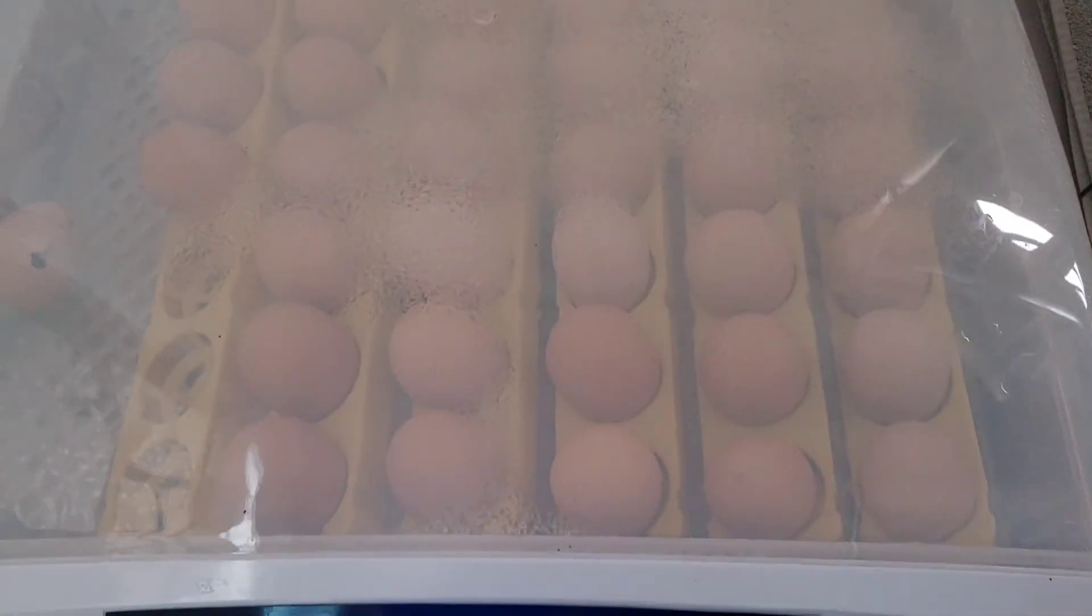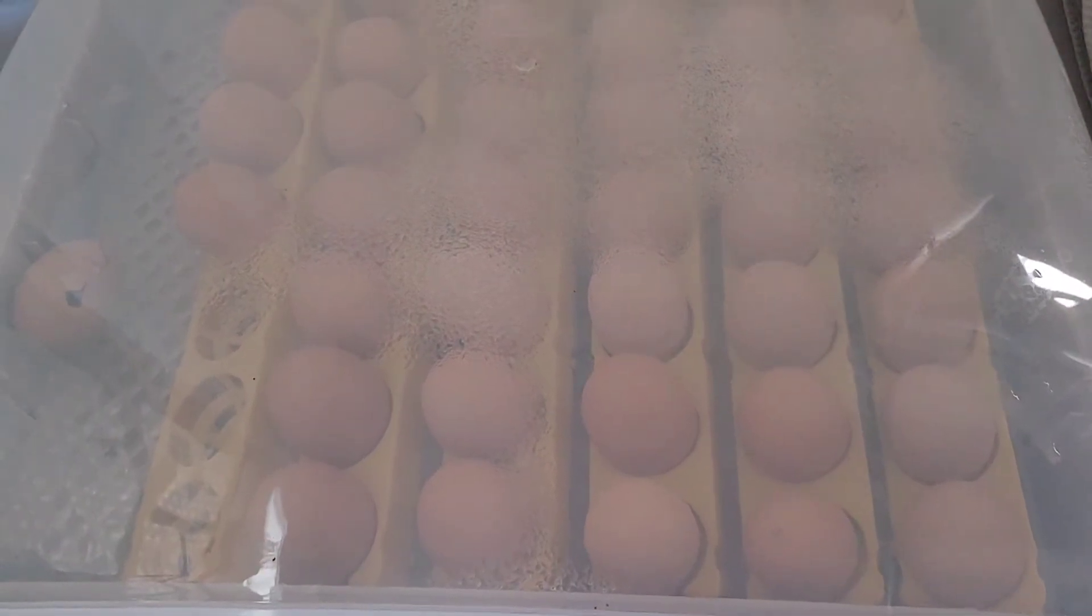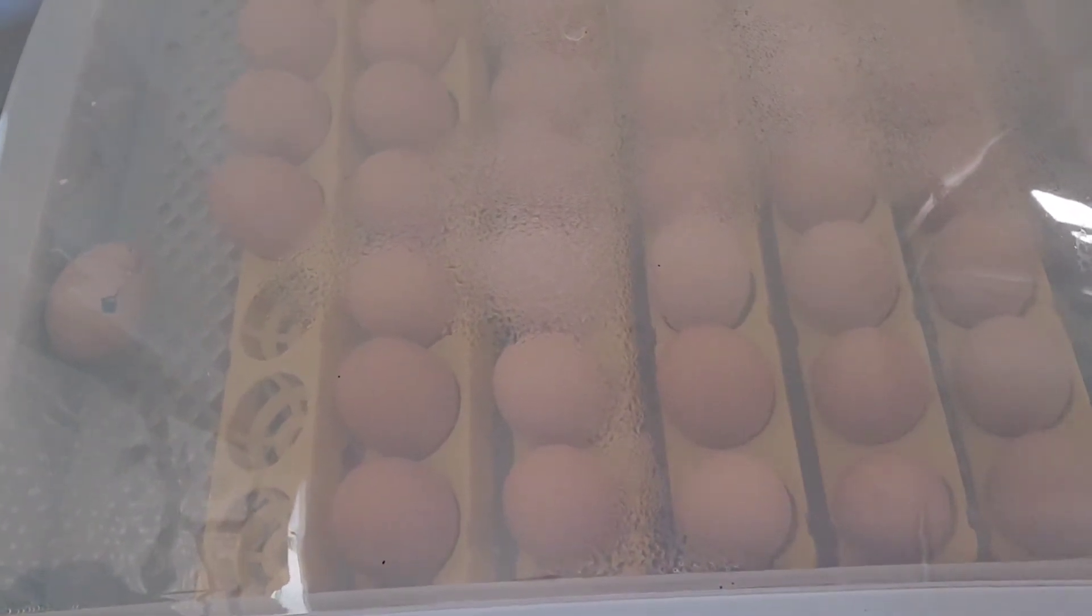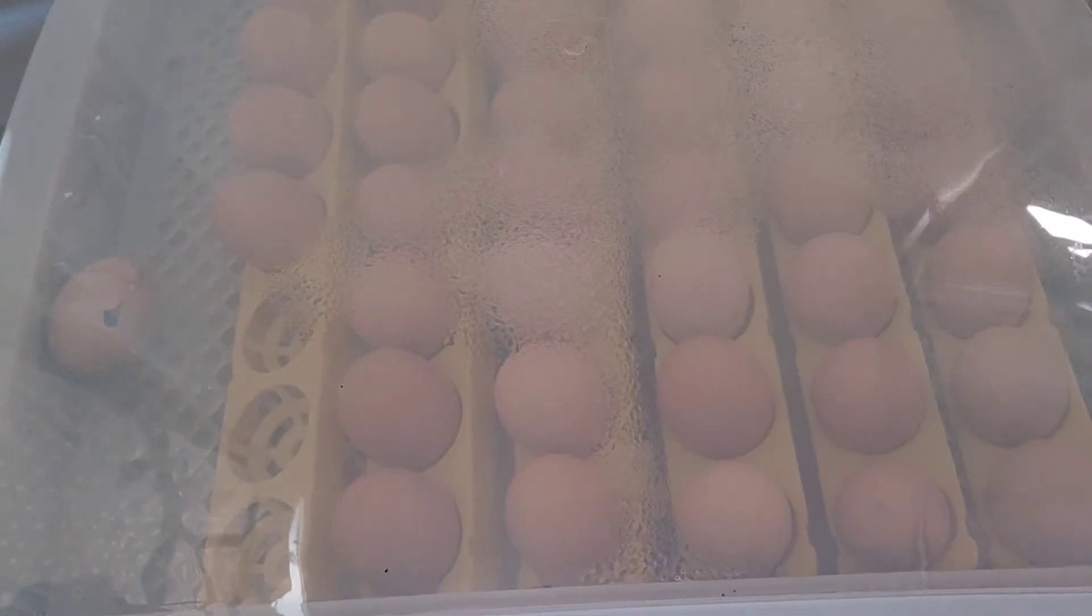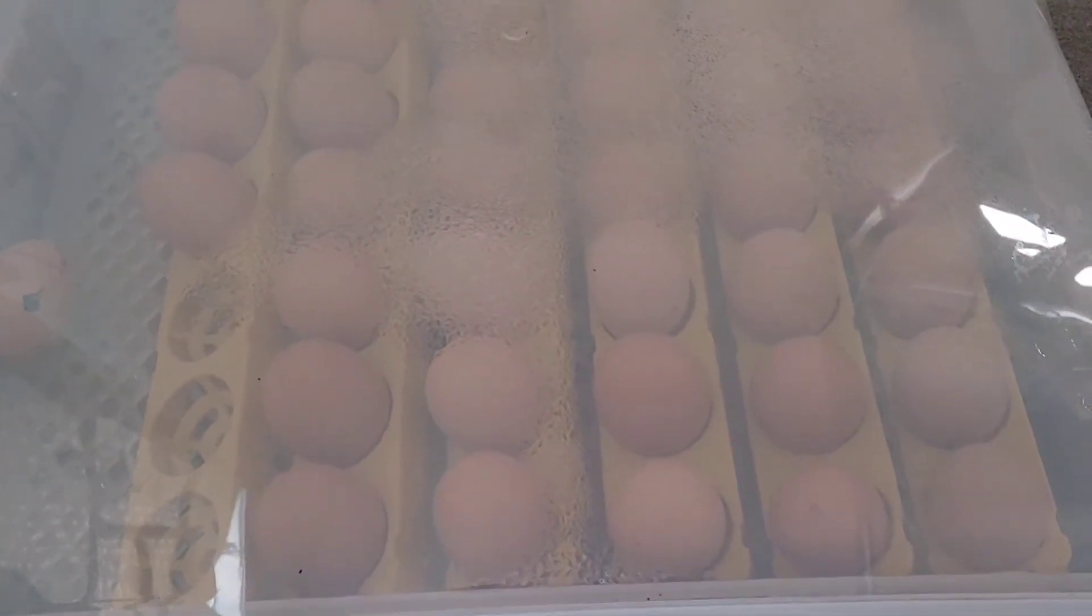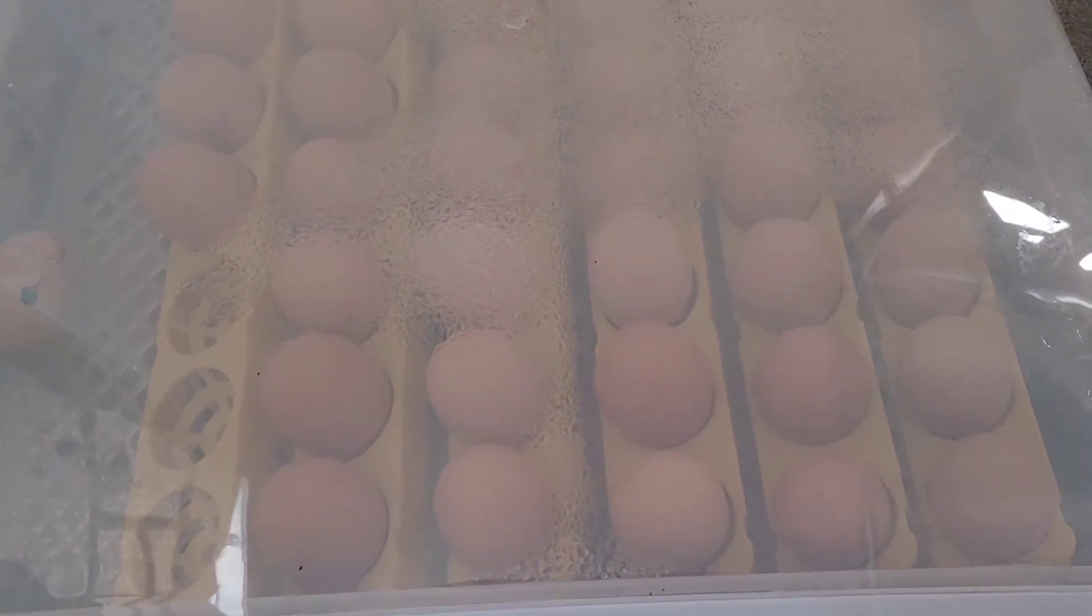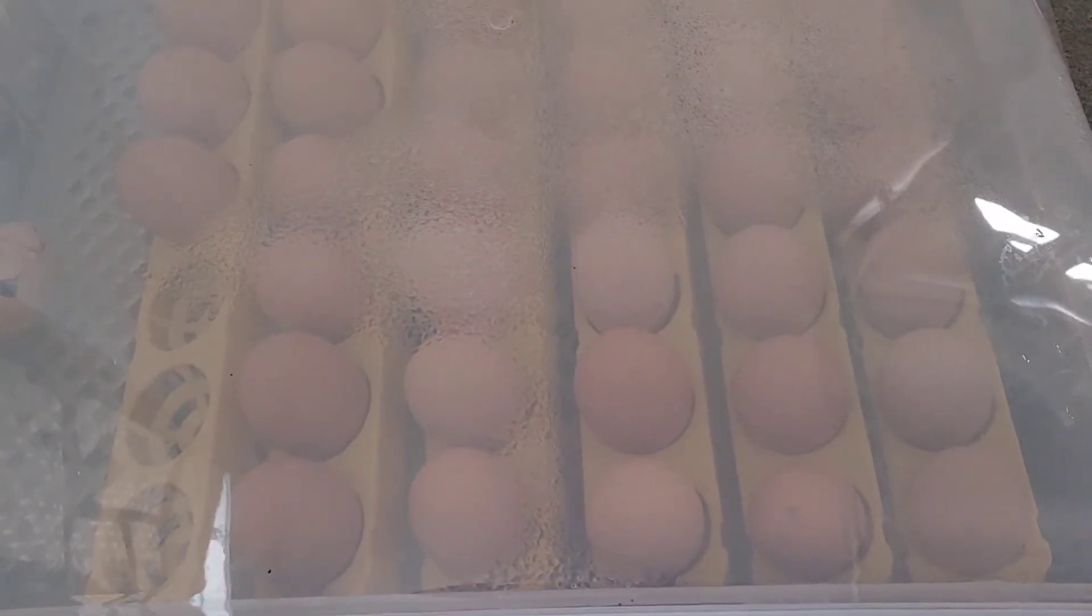I was candling some. I have found some eggs to be more full of the chicken itself where you candle them and you really can't see anything on the bottom. You can see the air pocket on the top, but it's full. Others seem to have some room still at the bottom for the chick to fill in.